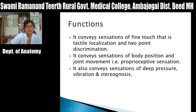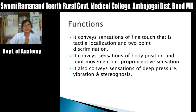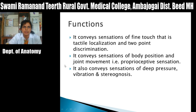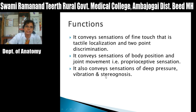Functions of this tract: it conveys sensation of fine touch — that is tactile localization and two-point discrimination. Tactile localization means the ability to localize exactly the part of the skin that is touched. Two-point discrimination means the ability to locate two separate points on the skin. It also conveys sensations of body position and joint movement — that is proprioceptive sensations — to the conscious level.